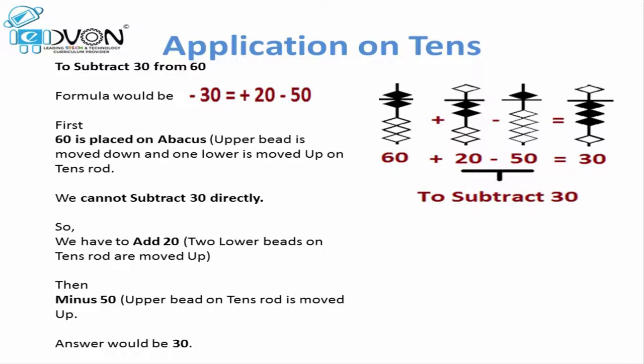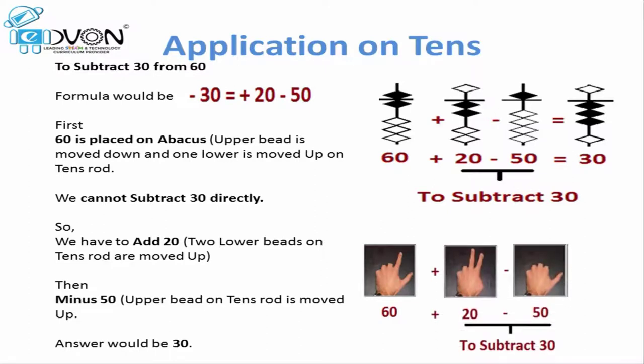Let's take this same example on our fingers as well. If we want to subtract 30 from 60 on our fingers, first we place 60 on the left hand. Now to subtract 30, we only have 10 or 50 available, so we cannot directly subtract 30. We apply the formula: minus 30 equals plus 20 minus 50. We add 2 more fingers on the left hand and close the thumb to subtract 50. As a result we get 3 fingers on our left hand representing the value 30, so our answer is 30.